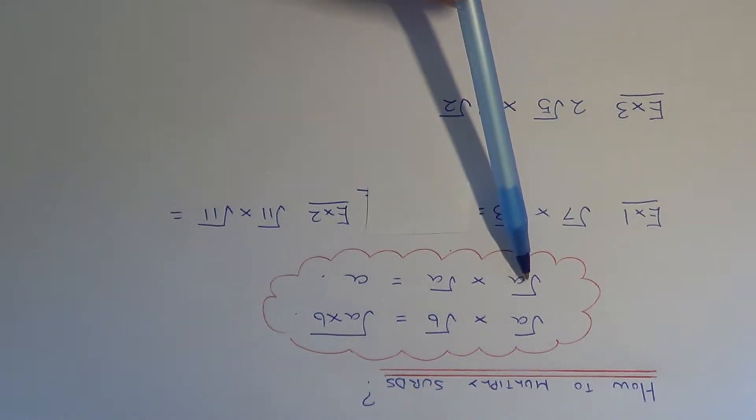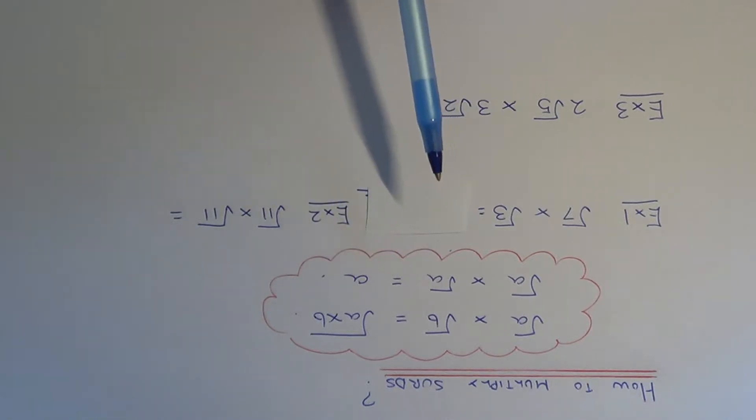The second rule: if the surds are the same, so if you have root A times root A, you'll just end up with the answer A.